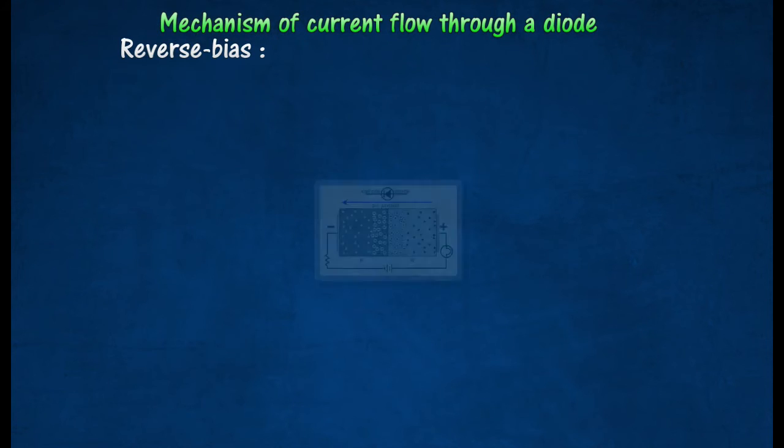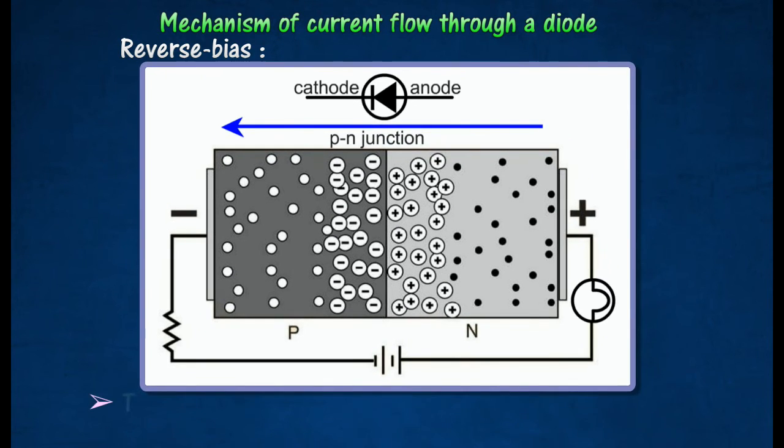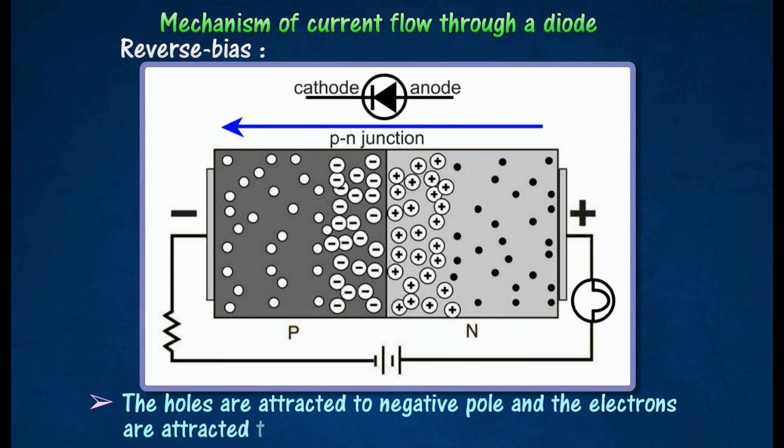In reverse bias, the polarity of the battery is reversed with the negative terminal connected to the P-type semiconductor. The holes and electrons move away from the junction due to the attractive force exerted on these carriers by the negative and positive terminals respectively.